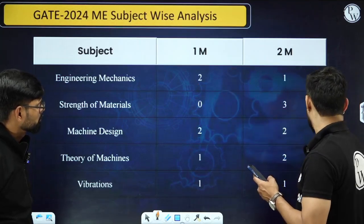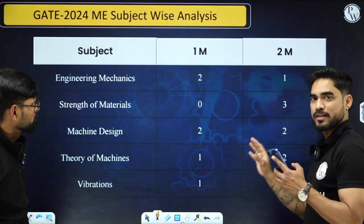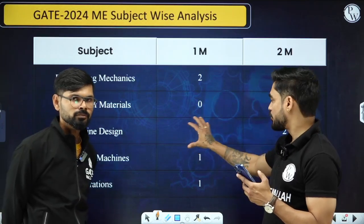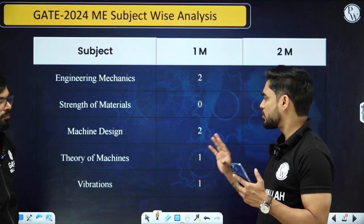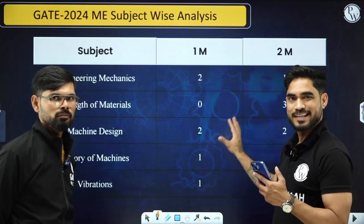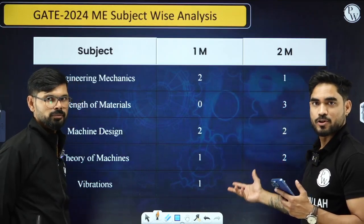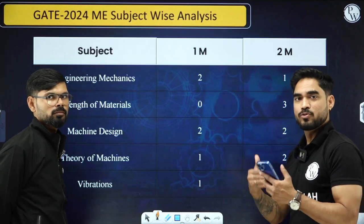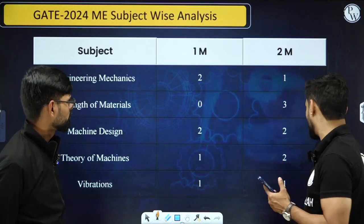Strength of material weightage has increased a little bit. Machine design weightage is the same, and for the past two years a lot of questions are coming from machine design — almost six marks weightage, equivalent to strength of materials now. Earlier there were only one or two questions from machine design. So you have to focus on machine design; a lot of people tend to leave it during preparation, but it's a major subject now.